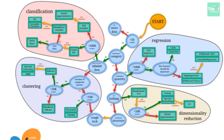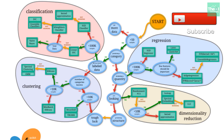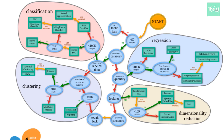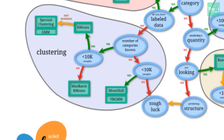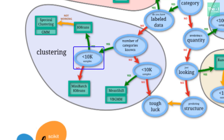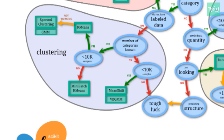Coming back to the condition where we check if the data is labeled — if we don't have labeled data, meaning no target or dependent variable, we fall into the clustering family of algorithms. Here we check if the number of categories are known. If yes, we check whether the number of observations are less than 10,000. If yes, we should opt for the K-Means algorithm.